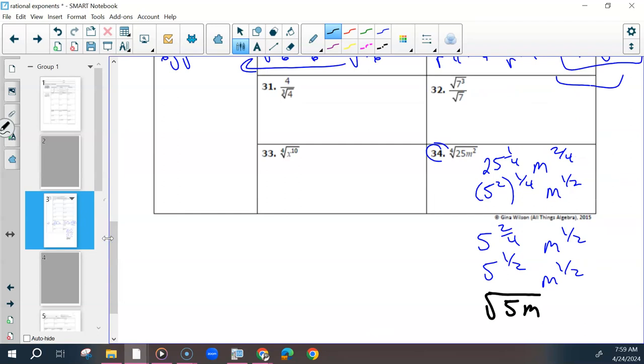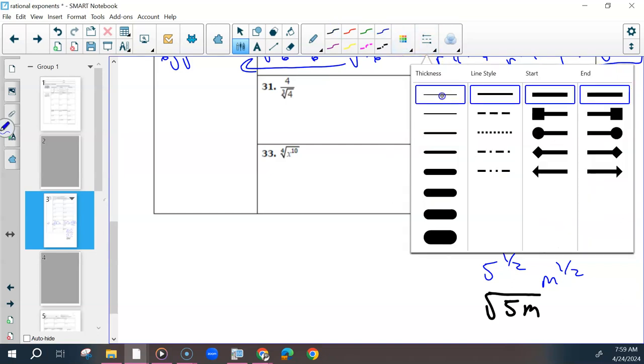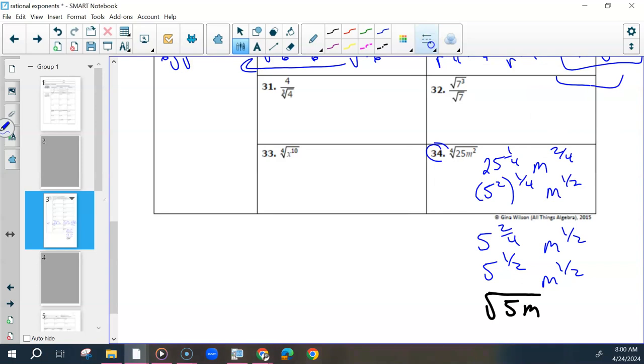So you would rewrite them first into exponential form. How would we write this one? 3 numerator. 7 to what power? 2 to 3. Let's go backwards. 3 halves. And then how would I write the denominator? 1 half. And we're dividing what basis, so we're doing what with the exponents? Subtracting. So that would be 7 to the 3 over 2 minus 1 half, which would give us 2 over 2, which is just 1.